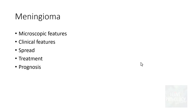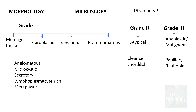In this part, we will discuss the microscopic features, clinical features, spread of meningiomas, treatment, and prognosis. In Part 1, we talked about the definition, etiopathogenesis, risk factors, gross features, and listed 15 variants of meningiomas, categorized into grade 1, grade 2, and grade 3. Grade 1 is the benign ones and grade 3 is the anaplastic or malignant ones.